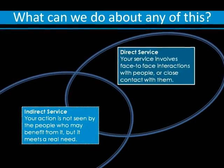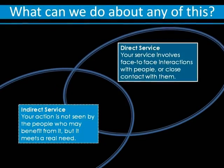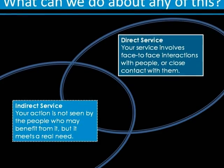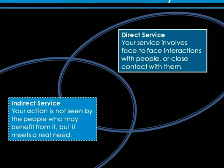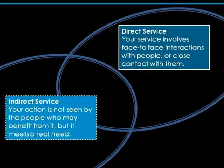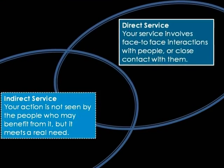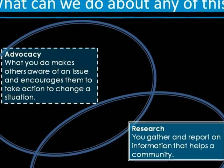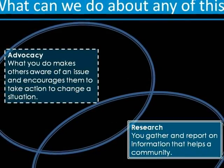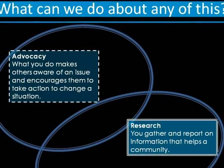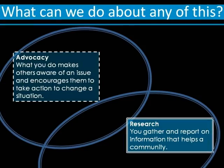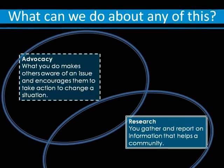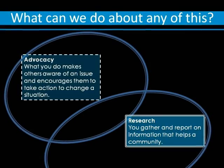There are four different types of service. Direct service requires your face-to-face interaction with people or close contact with them. Indirect service, on the other hand, is not seen by the people who may benefit from it, but meets a real need. Another way is advocacy — what you do makes others aware of an issue and encourages them to take action to change a situation. Another thing may be research, where you gather and report on information that helps a community.